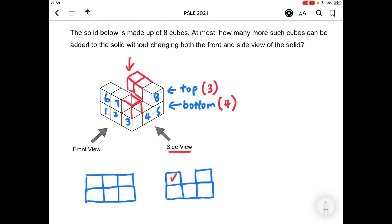So without changing both the front and side view of the solid, the total number of cubes that can be added to this will be 3 plus 4 equals to 7. And that's the answer to this question.